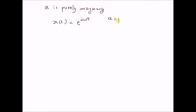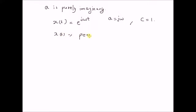We also assume that c equals 1 for simplicity. So in this case, x(t) is basically a complex sinusoid. In other words, x(t) equals cos(ωt) plus j times sin(ωt).